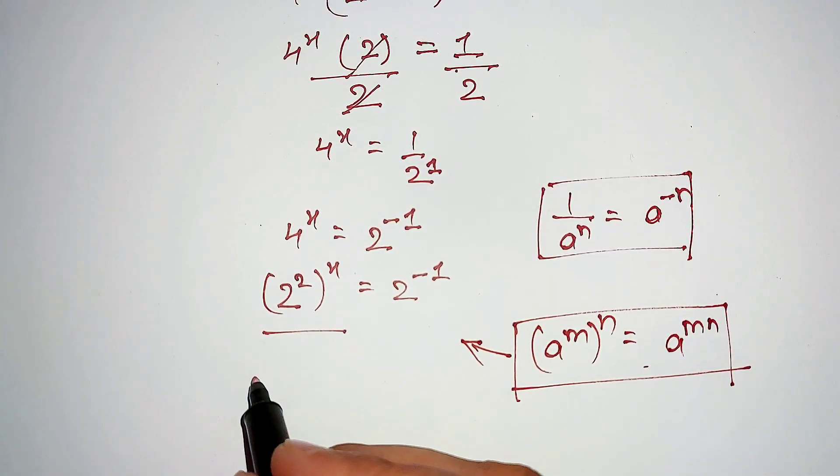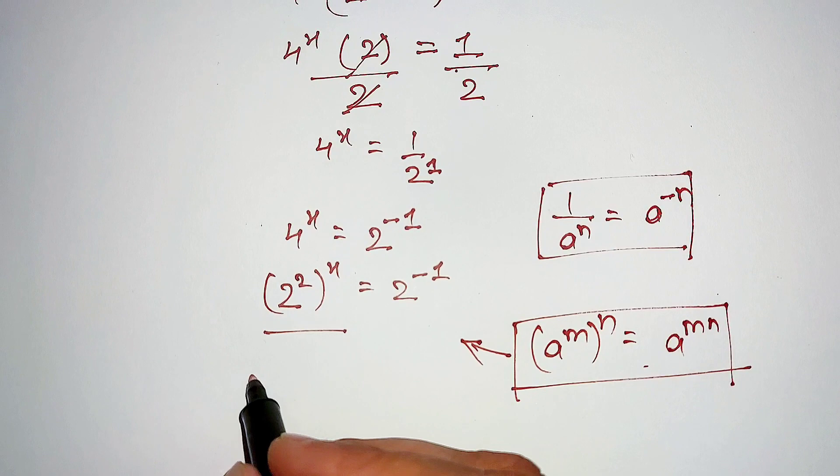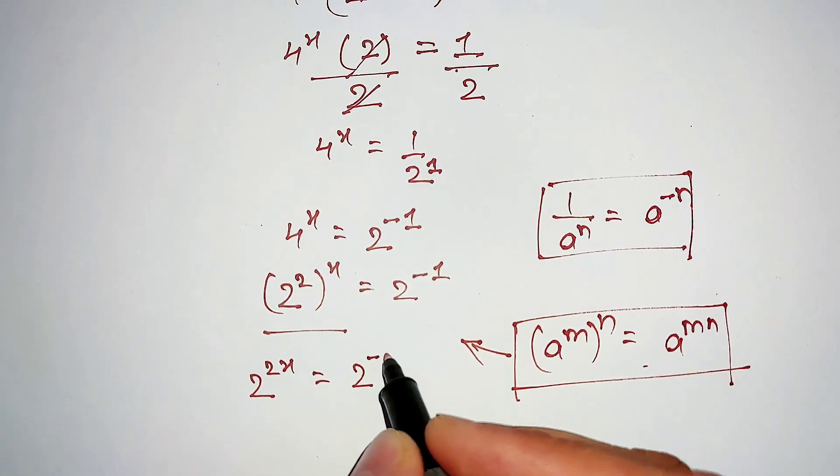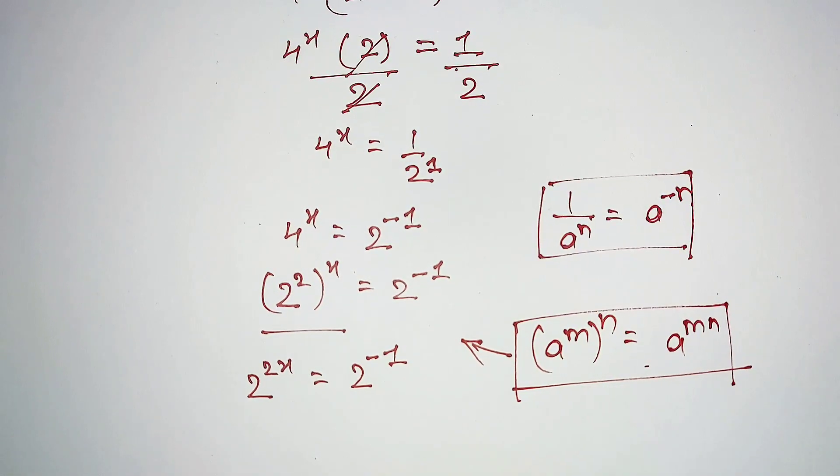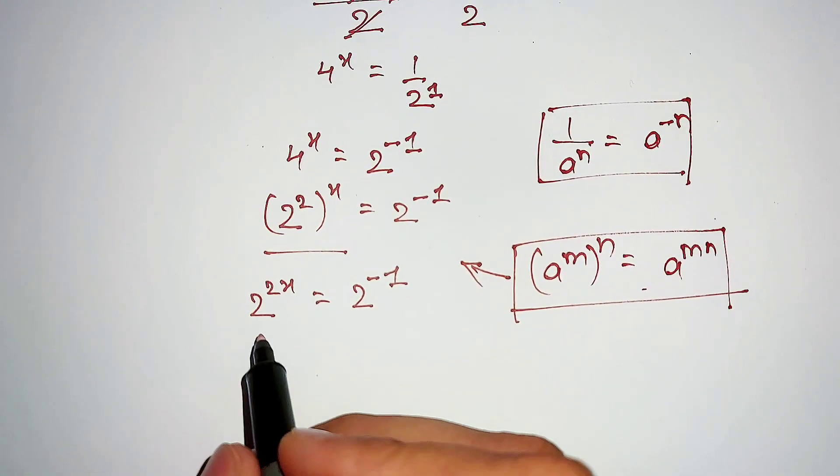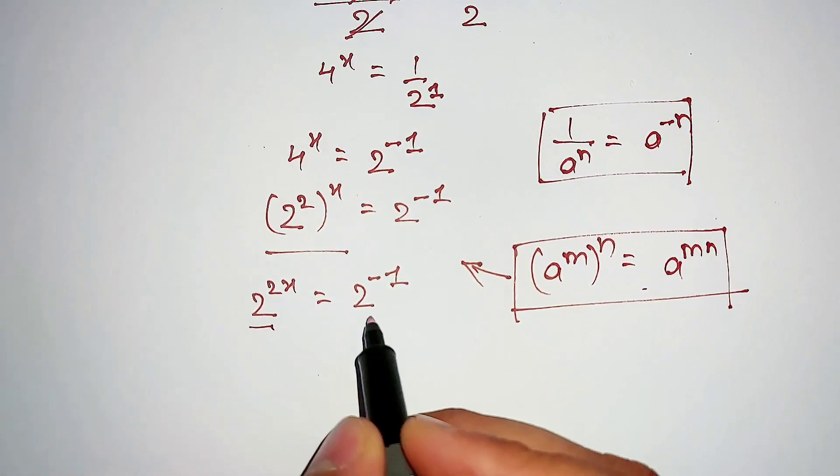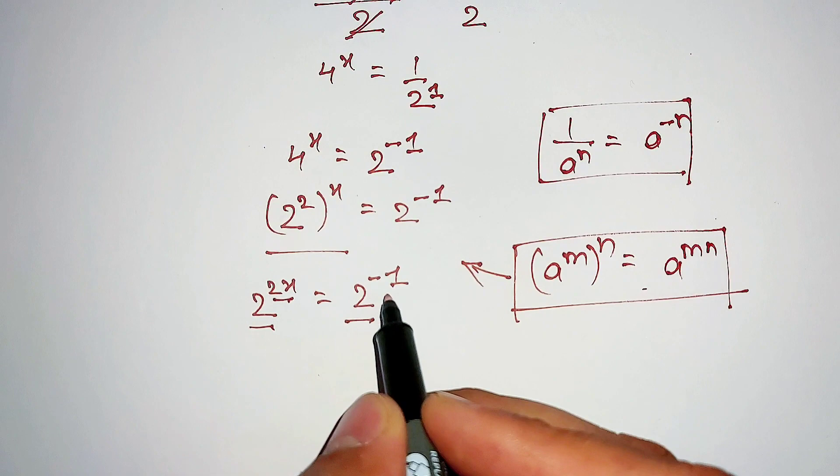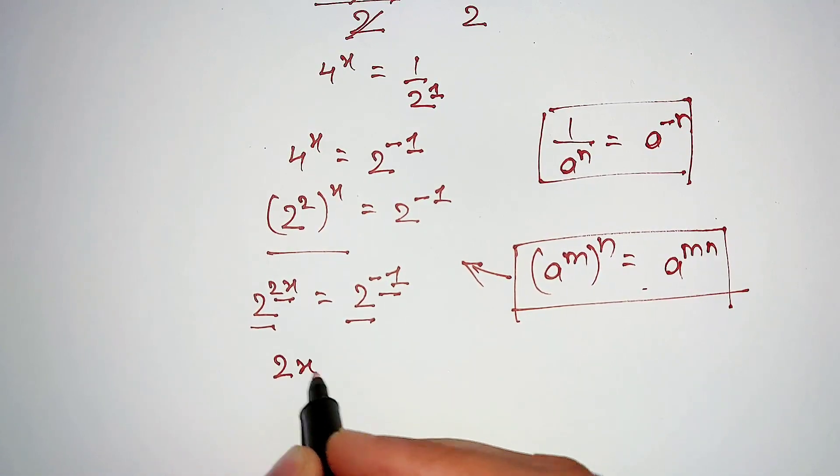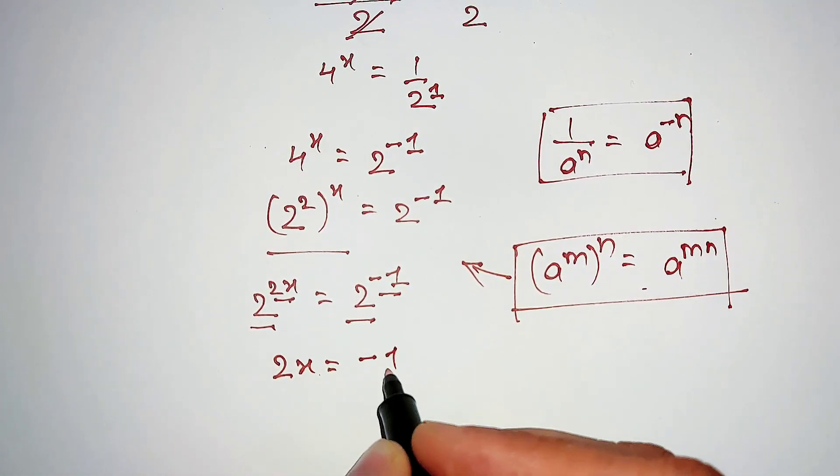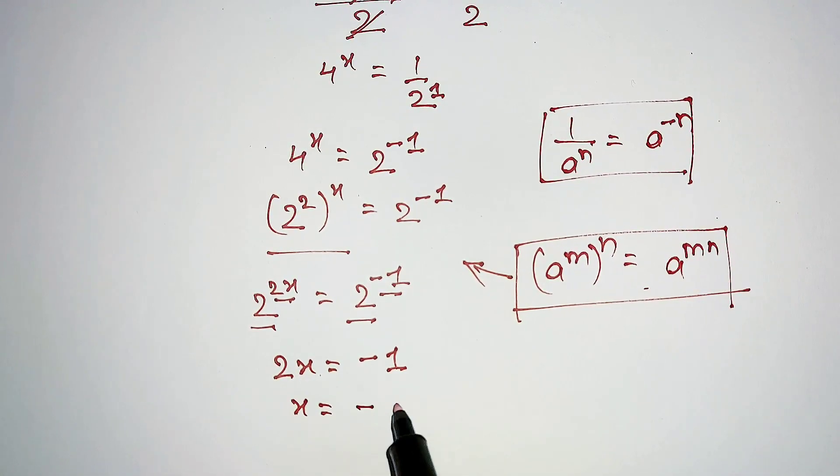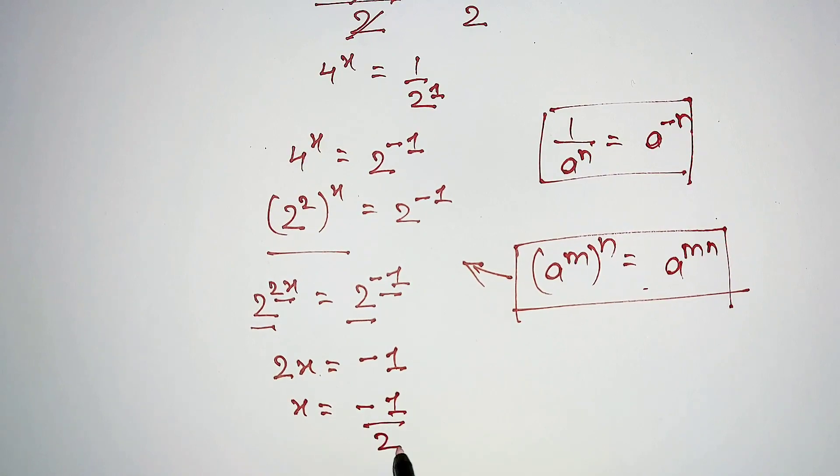Here this equation looks like 2^(2x) equals 2^(-1). If we see both sides have the same base, then we are comparing the powers of this equation. Here 2x equals -1, and x equals -1/2, and that is our final answer.